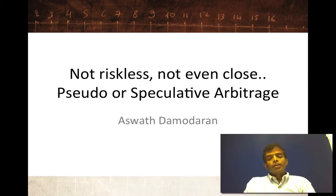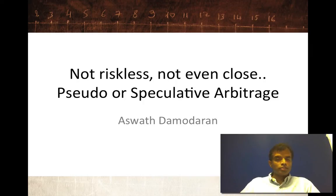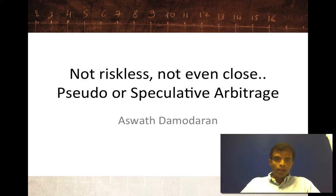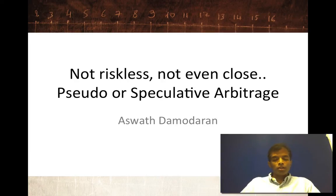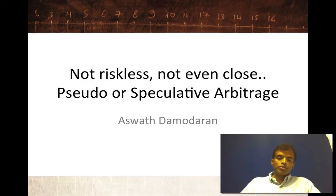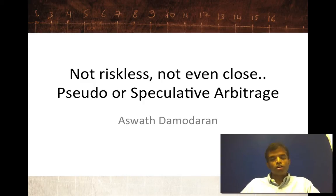Hi, welcome back. The last two sessions, we looked at two versions of arbitrage. The first was pure arbitrage — two exactly identical assets in terms of cash flows trading at different prices at the same time, with a guarantee of convergence in price. That's pure profit. The second we call near arbitrage, where we have two similar, close-to-identical assets trading at different prices with perhaps no guarantee of convergence — close to riskless, but not riskless.